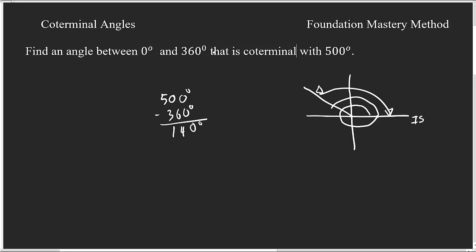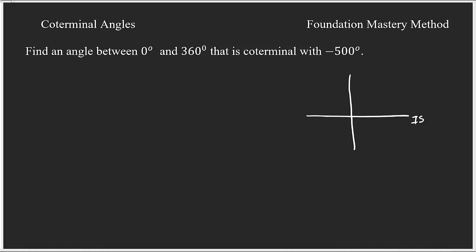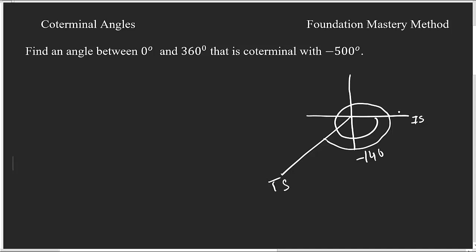Now another example: we need to find the coterminal angle between 0 and 360 degrees that is coterminal with negative 500 degrees. For negative 500, we move in the negative direction. You get 360 degrees, then you need to go another 140 degrees in the negative direction. So this gives negative 140 degrees — this is my terminal side.